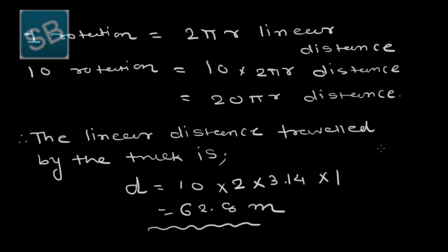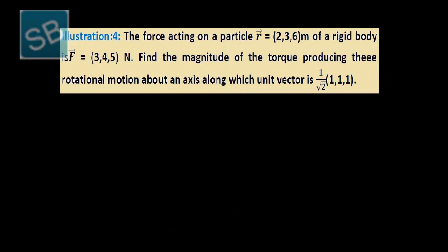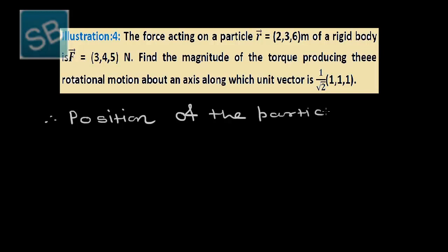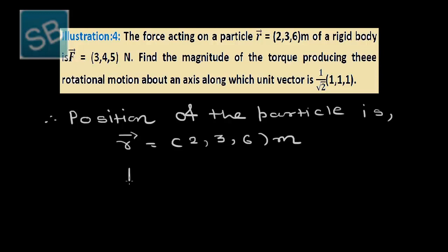We will now study one more quantity in rotational motion — torque. Starting illustration number 4, related to rotational dynamics. The force acting on a particle is given; the position vector is r = (2, 3, 6) and the force is F = (3, 4, 5) Newtons.